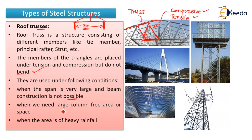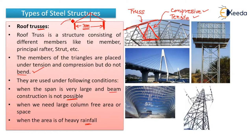Roof trusses are also used when we need a large column-free space and when beam construction is not possible. Additionally, when the area where the structure will be constructed has heavy rainfall — meaning rainfall over a large period of the year or very heavy precipitation — roof trusses will be provided.